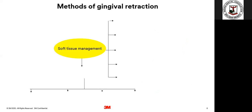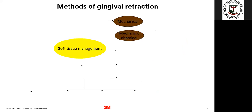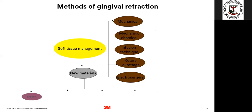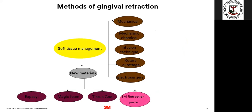How much retraction should there be? There should be at least 0.2 mm of gap created between the tooth surface and the gum so that your impression material can penetrate that area to record beneath the margin without getting torn. The methods of gingival retraction include mechanical and mechanico-chemical approaches. There are also newer methods like Expasyl, Magic Foam, tissue cord, and the more recent 3M retraction paste.